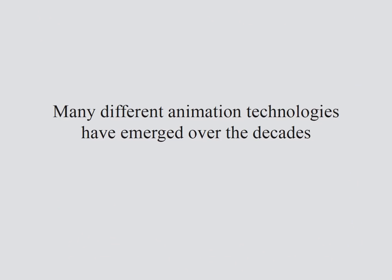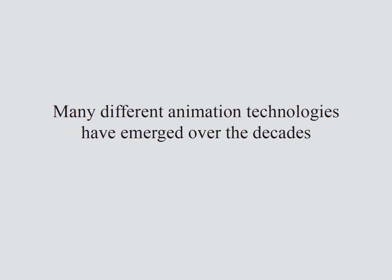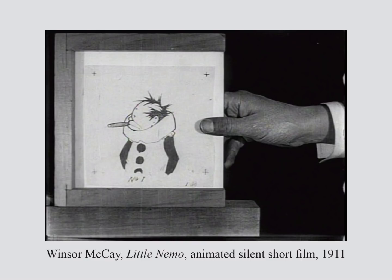Now let's look at some of the various methods whereby animation is created. The most basic technique is called the Pencil Test — you simply draw lots of images and shoot them one frame at a time. Here's an example from Little Nemo, where a mechanism registers the drawings so they're all lined up. Today we would use an animation pegboard to do that.